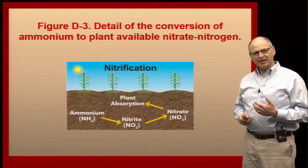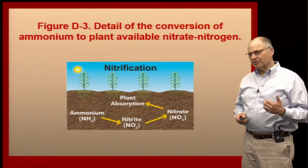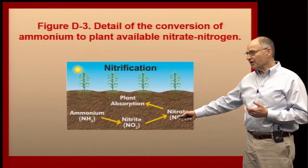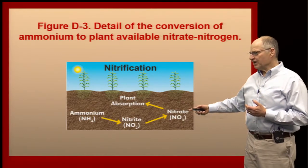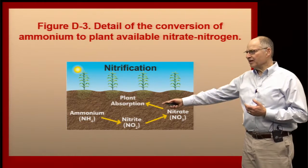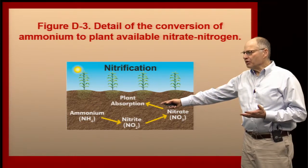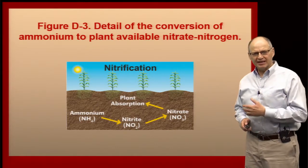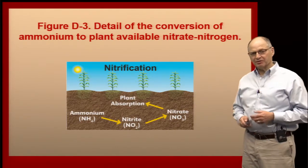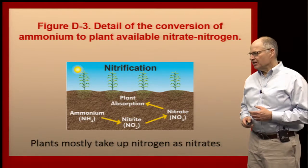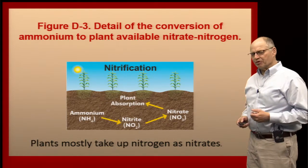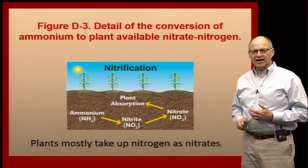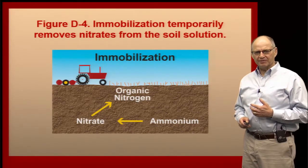The next step is nitrification, which is when nitrogen goes from the ammonium form to nitrite. It doesn't stay in nitrite very long — then it becomes nitrate. Although plants can take up ammonium as well as nitrate, most of the nitrogen going into the plant is in nitrate form. So that's what we really want to keep track of, because ammonium is not taken up by plants as readily.